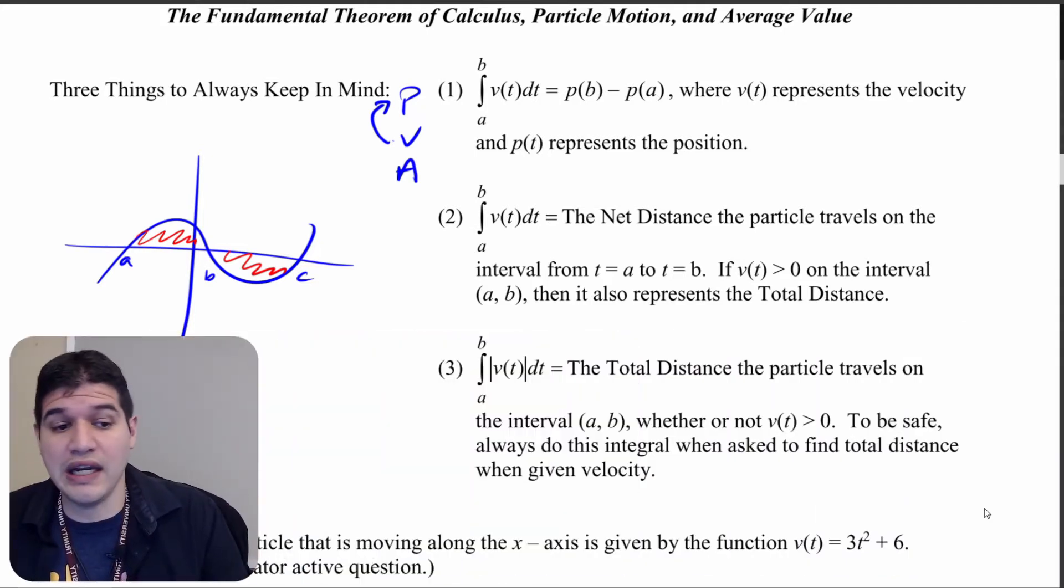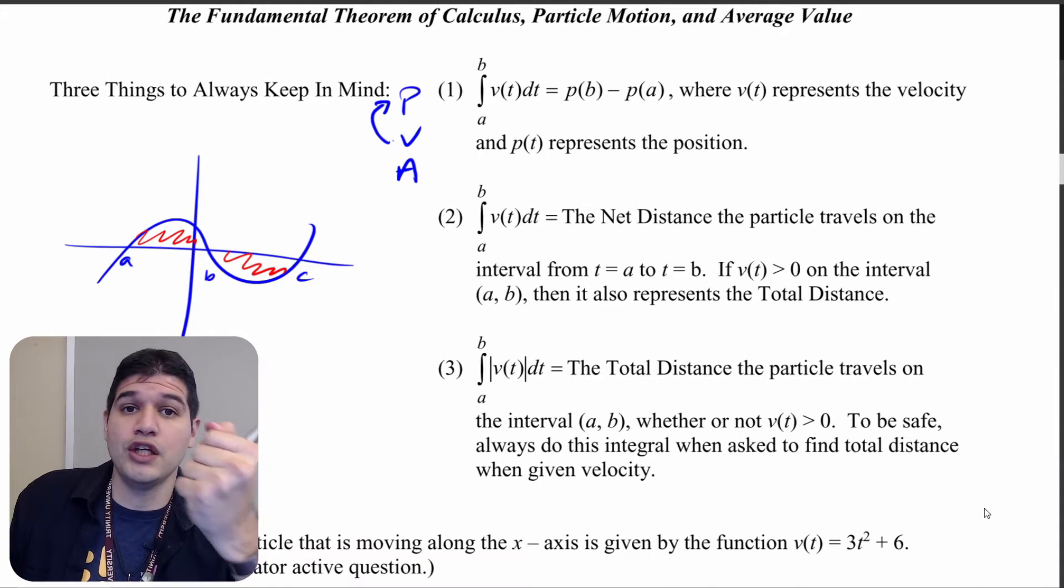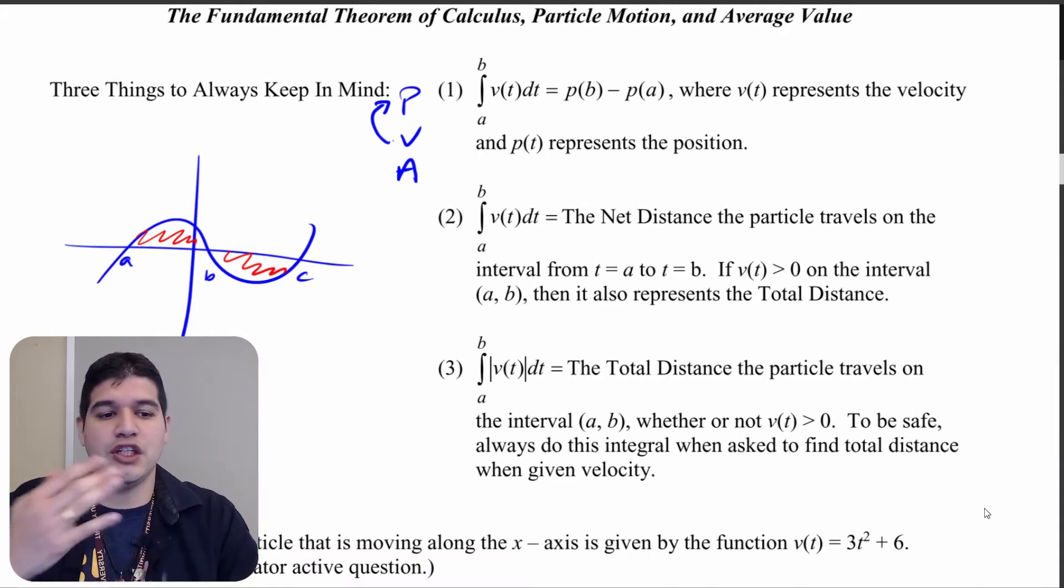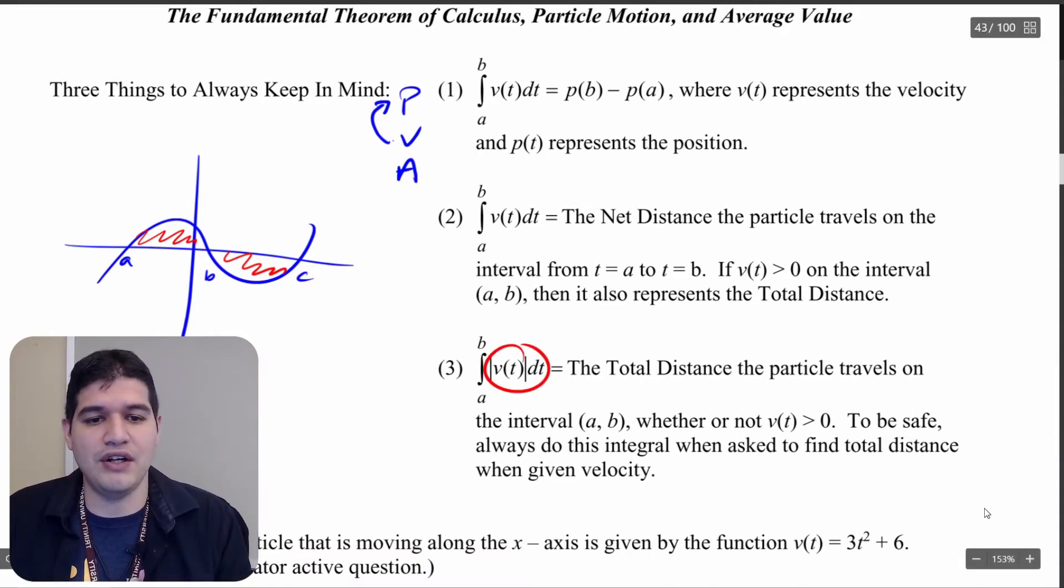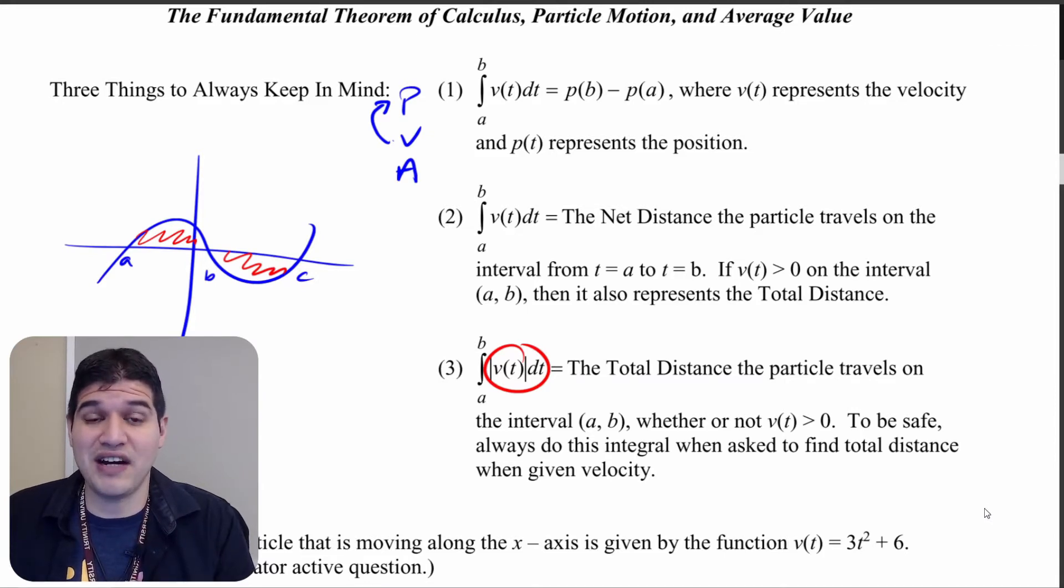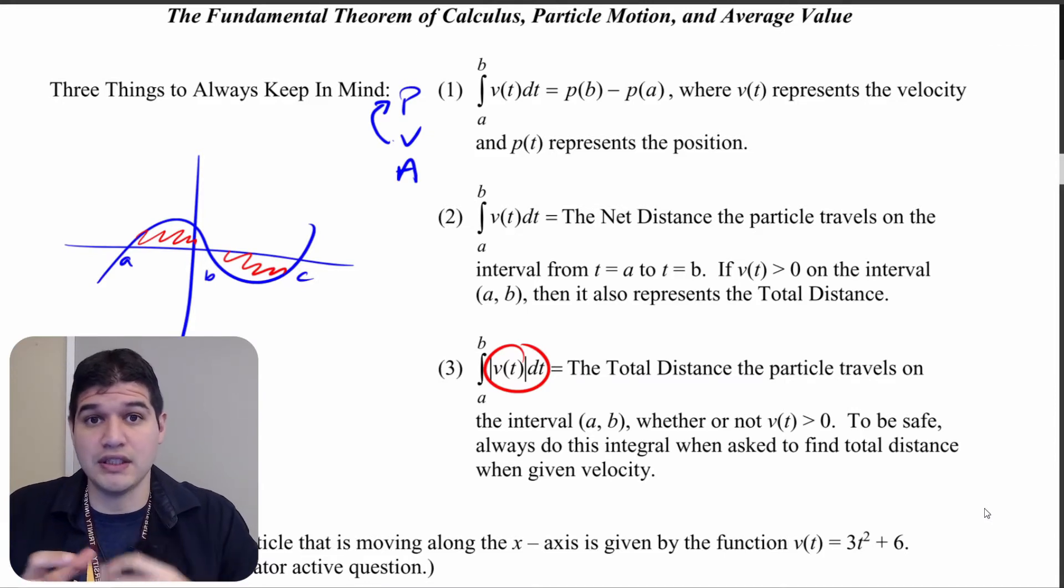Which we're going to look at here in part three. Keep in mind that for total distance, you're going to have to make sure you do that absolute value. Which means you're going to have to find the integral from a to b and the integral from b to c and make sure it's non-negative so you can combine both of those distances.